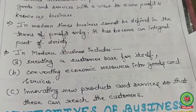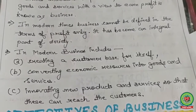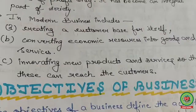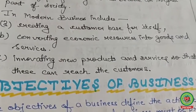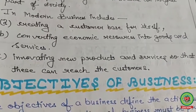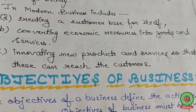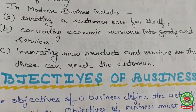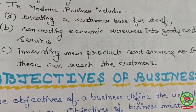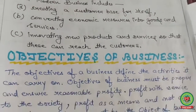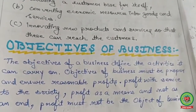First, customer creation. Second, converting economic resources and funds into goods and services — that is, after customer creation, converting funds into the production part. Third, innovating new products and services so they can reach customers. Innovation is required nowadays if you want to compete with competitors and survive in the business world. The objectives of business define the activities it can carry on.